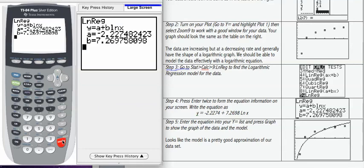In order to write the actual model, it looks a little bit different than what we had for the other formats. I need to plug in the value of a and the value of b into y equals a plus b, natural log of x. If I do that with the appropriate rounding to four decimals, I get what you see here in step 4 of the table.